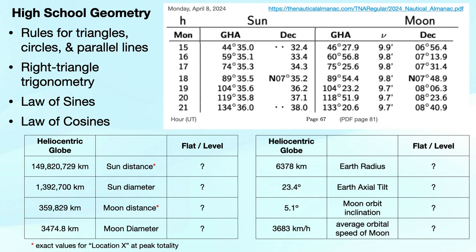Here are all the materials that you need for this challenge. The skills from high school geometry include rules for triangles, circles, and parallel lines, right triangle trigonometry, the law of sines, and the law of cosines. Because I'm not permitting the use of ephemeris tables, the distance values for the sun and moon are for the exact values for location X at peak totality. Described next.